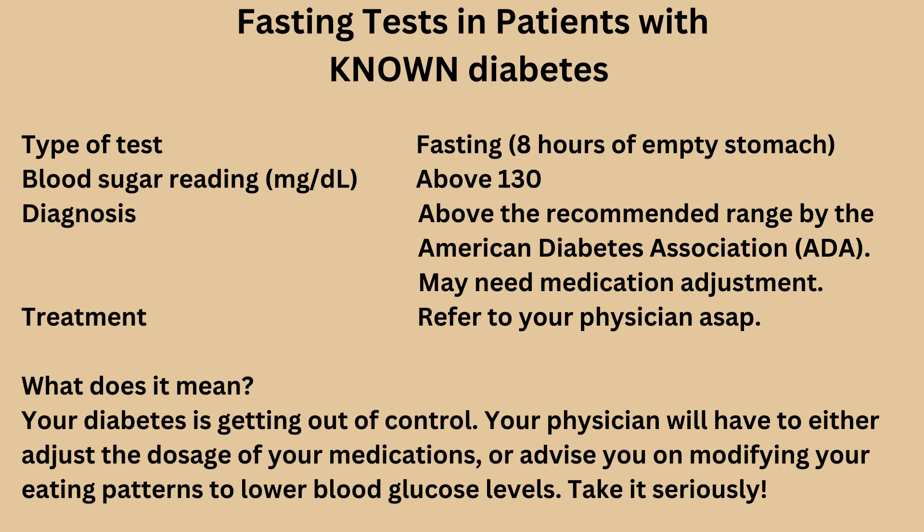If you are a patient with known diabetes and you took a fasting blood glucose test and got a reading above 130 milligrams per deciliter, then you are above the range recommended by the ADA. This means your diabetes is getting out of control. Your physician will have to either adjust the dosage of your medications or advise you on modifying your eating patterns to lower blood glucose levels — take it seriously.